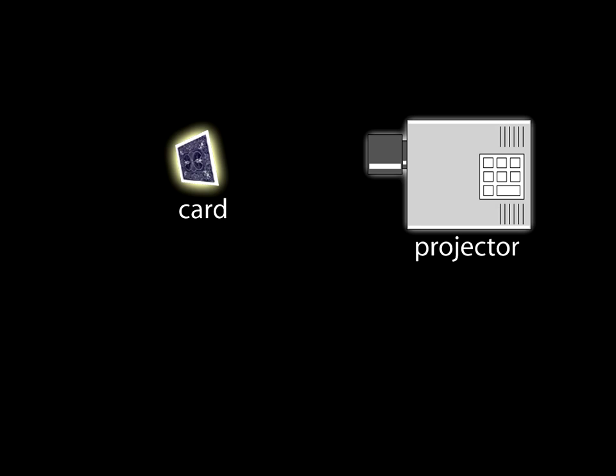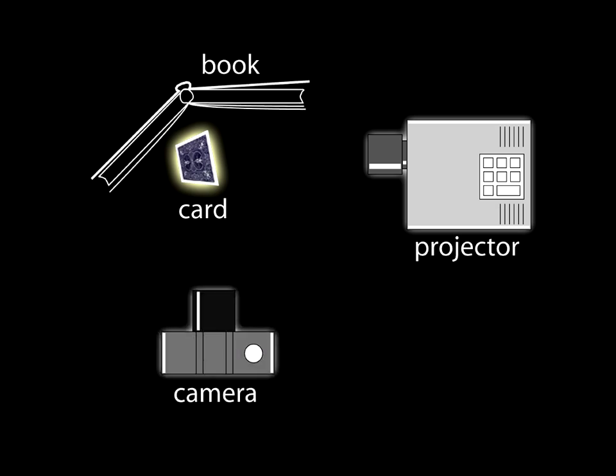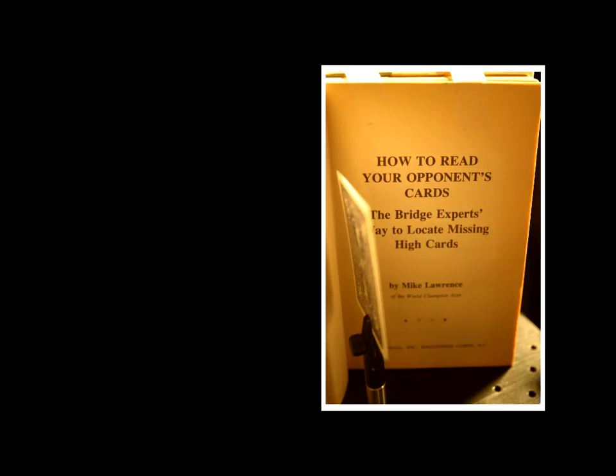Finally, we perform an experiment to demonstrate that we can capture subtle diffuse-diffuse interaction. The projector is set up in front of a standard playing card, while the camera is placed so that it can see the back of the card and the diffuse page of a book. In this case, the light going from the projector to the camera had to undergo a diffuse bounce at the card and another at the book. The image on the right is what the camera can see under ordinary room lighting.